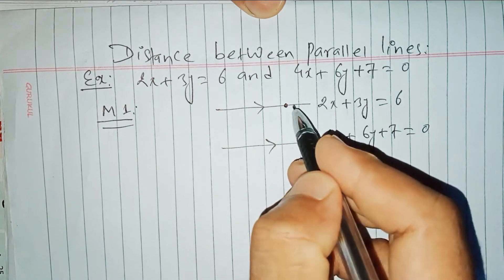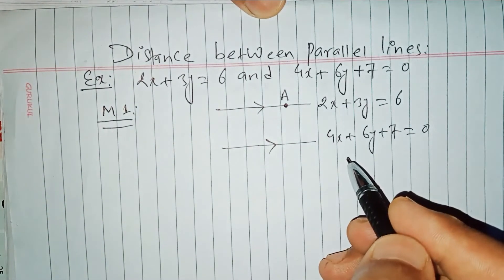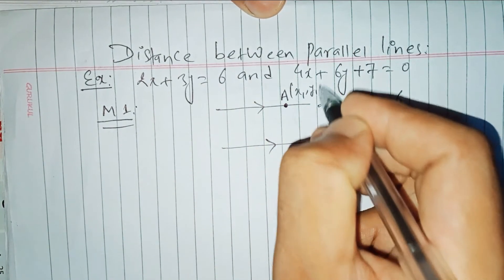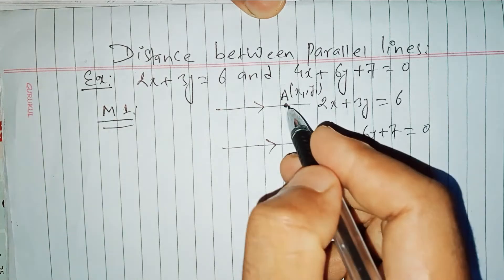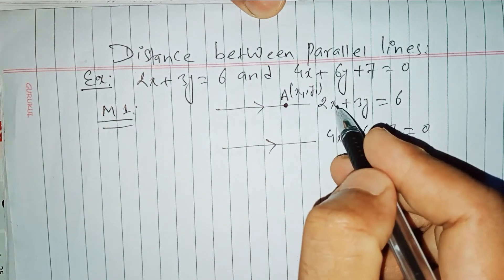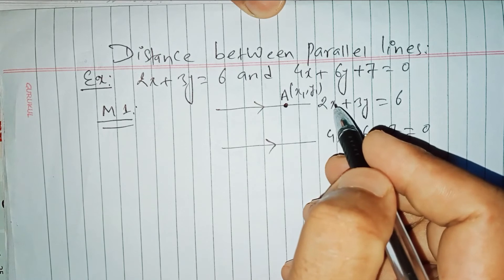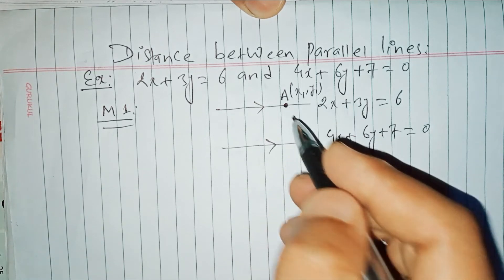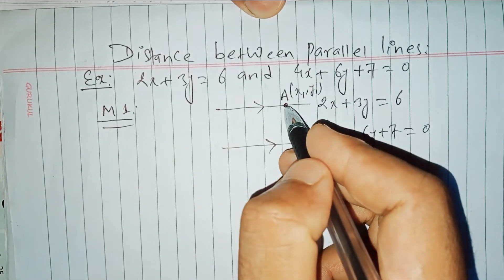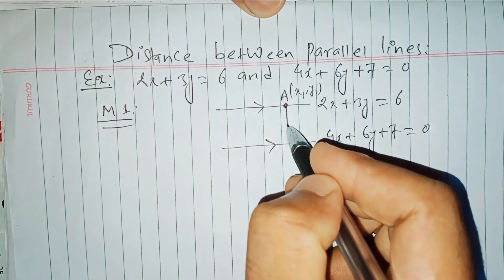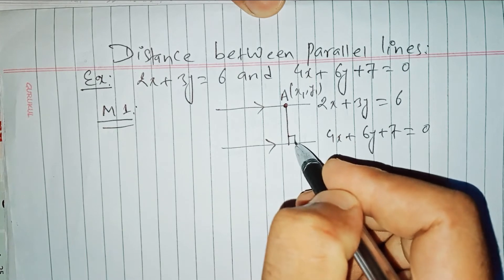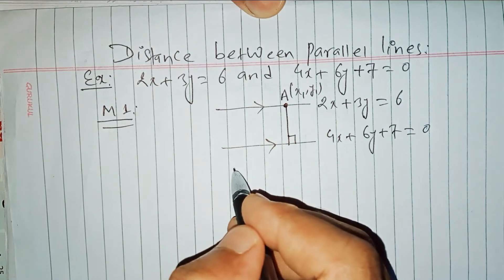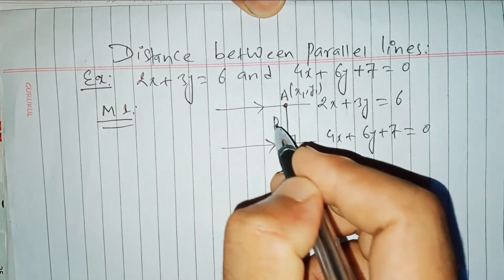For example, take a point with coordinates (x1, y1). The point lies on the first line. The perpendicular distance from this point to the other line represents the distance between the two parallel lines.